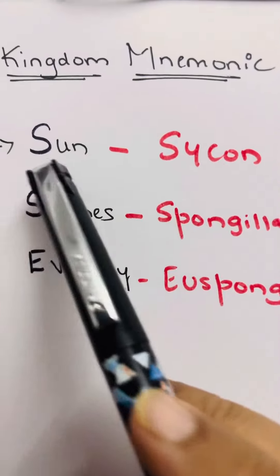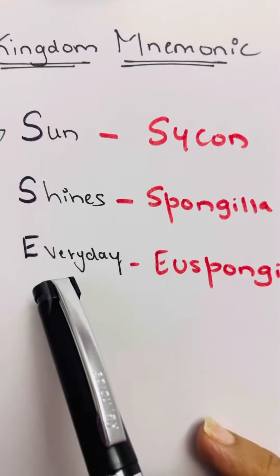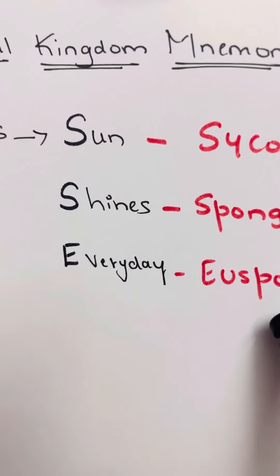Sun shines every day: S for Sycon, another S for Spongilla, and E for Euspongia.